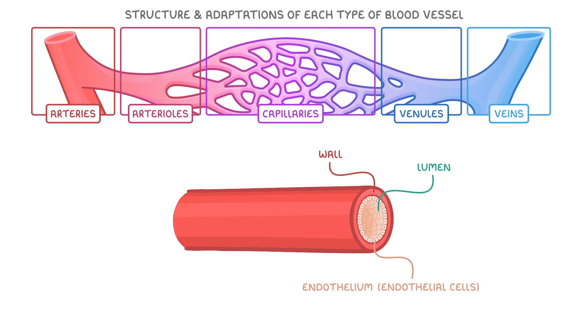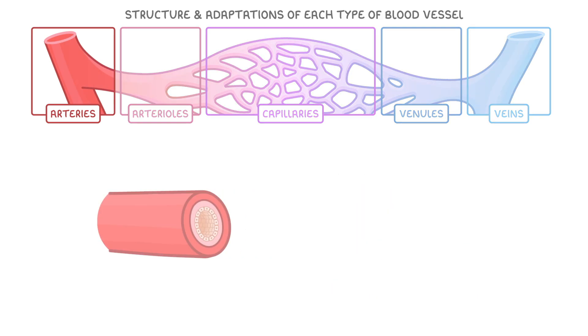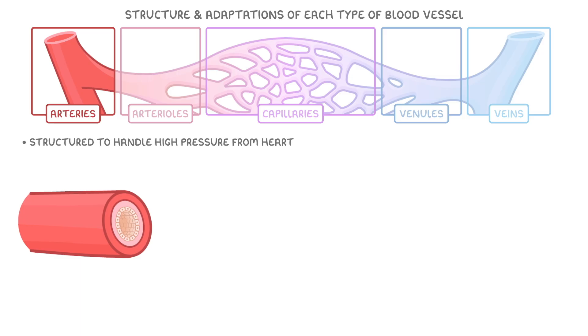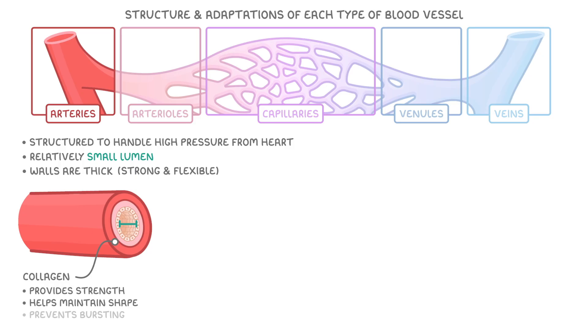Let's begin with arteries, which are structured to handle really high pressure from the heart. They have a relatively small lumen because their walls are very thick and contain layers that make them both strong and flexible. One of these substances is called collagen, which provides strength, helps maintain the shape of the artery, and prevents it from bursting even when a large volume of blood is flowing through it at high pressure.